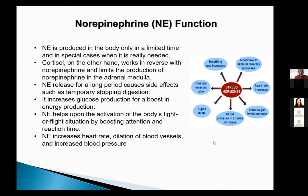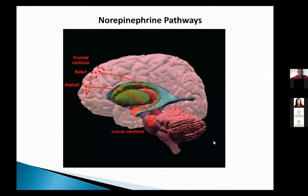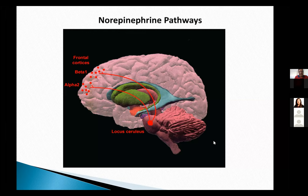Locus coeruleus is the main site for norepinephrine pathways — a very common MCQ topic. Alpha-2 receptors and beta-1 receptors have slightly different locations and mechanisms. Alpha-2 agonists can be relaxing, can reduce hyperactivity, and can help reduce stress-related anxiety. The norepinephrine pathways going to the limbic system are extremely important, primarily going to the amygdala.